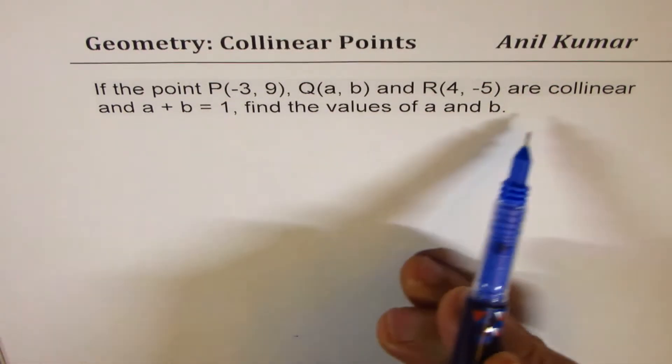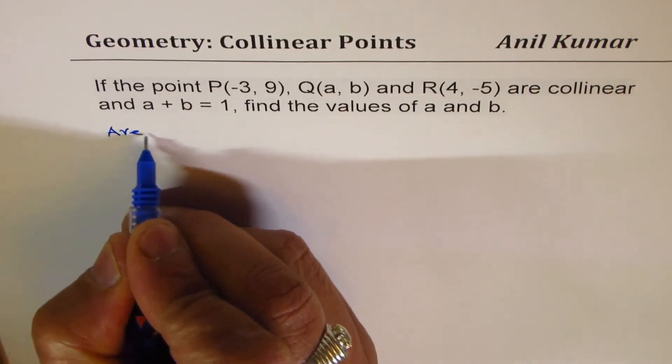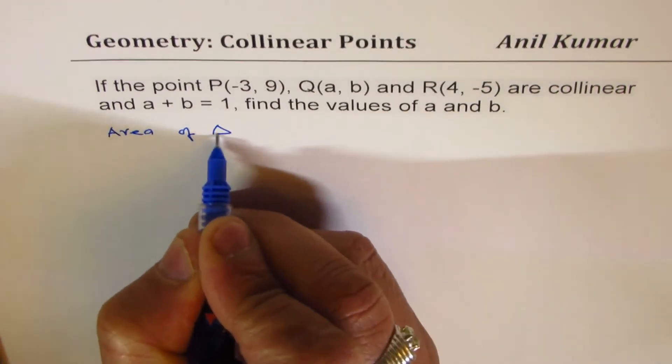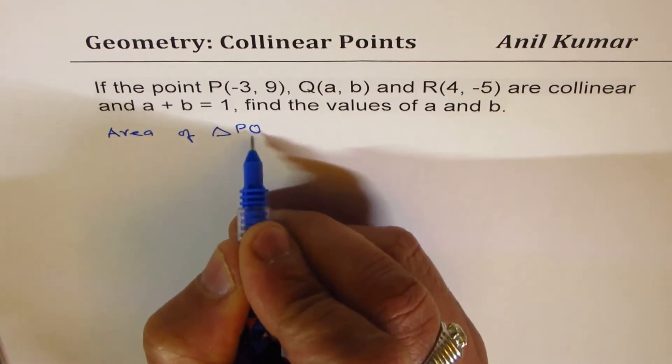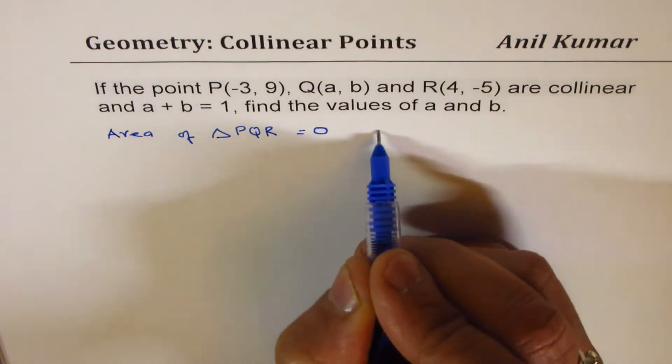Now when we say that the points are collinear, in that case, area of the triangle PQR has to be 0. Since they are collinear, they are in the same line, correct?